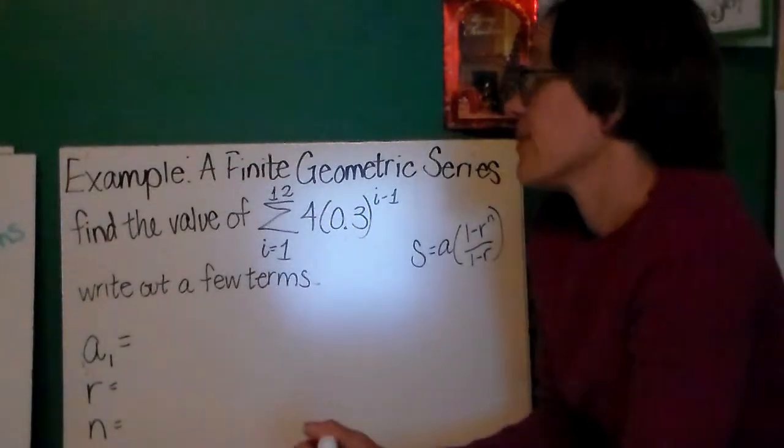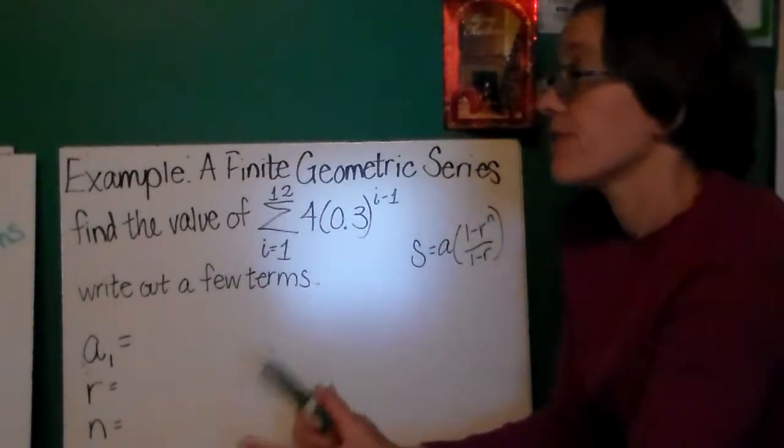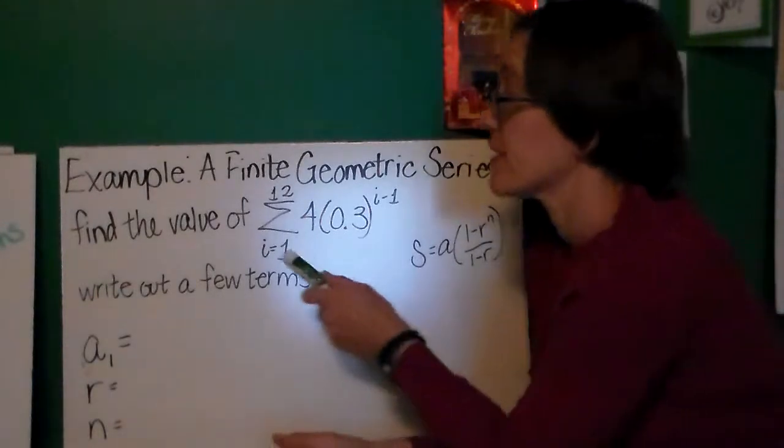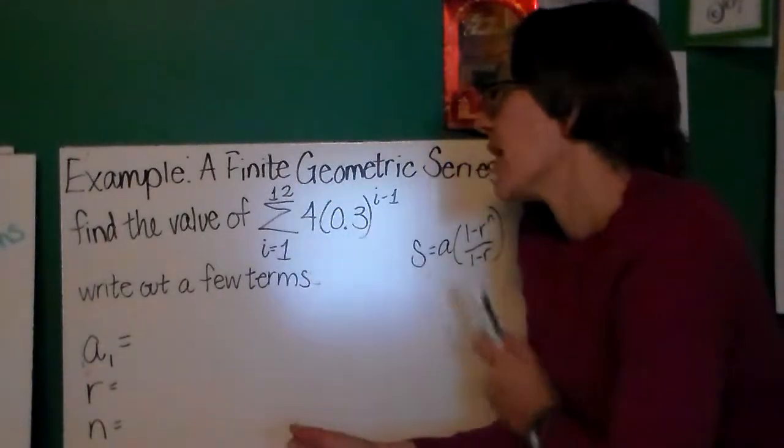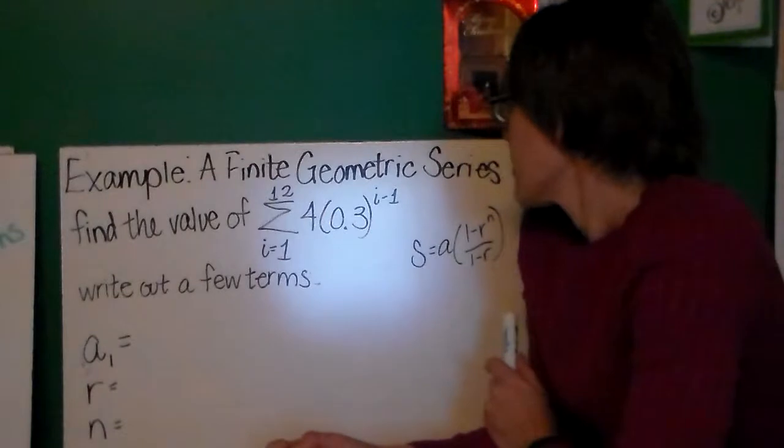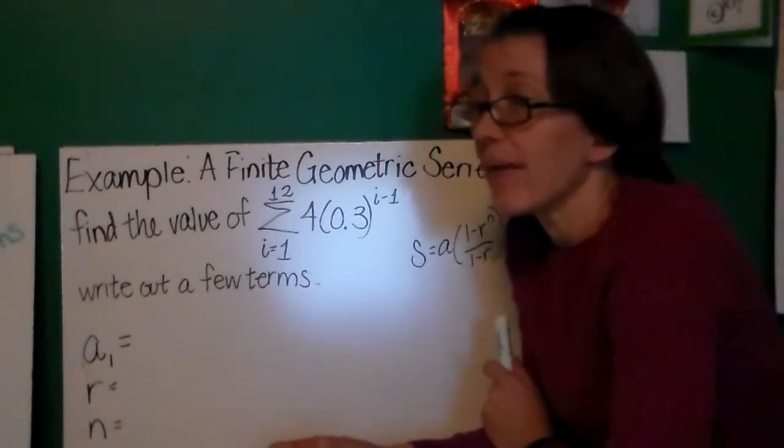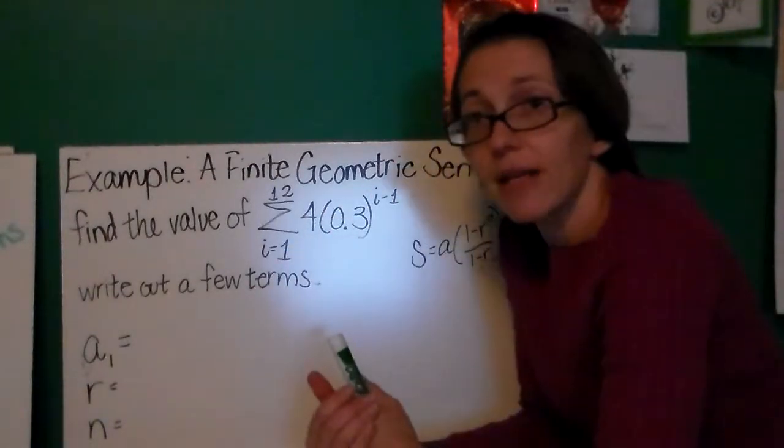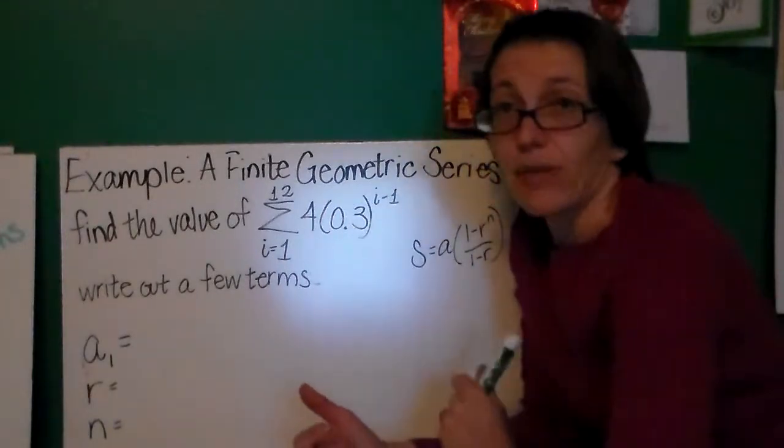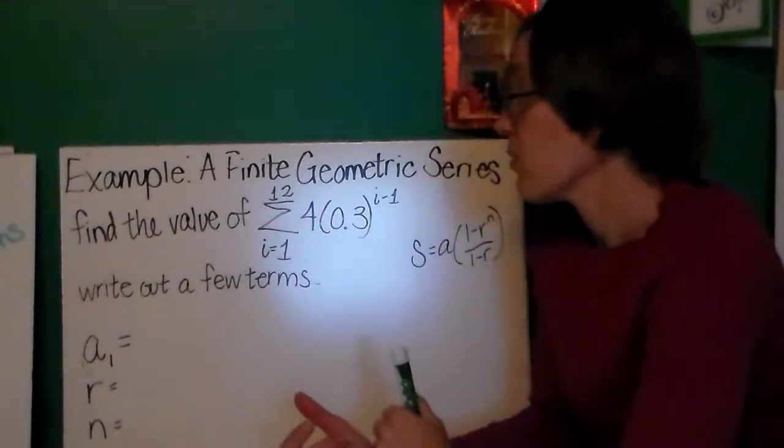Here's an example of a finite geometric series. We are asked to find the value of the sum, as i goes from 1 to 12, of 4 times 0.3 to the i minus 1 power. The very first thing I want to think about is, is this written in the correct format? Okay, it is.